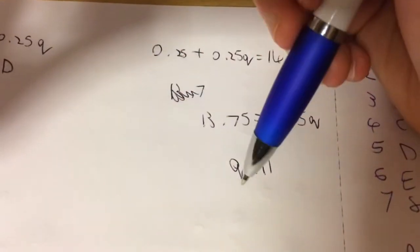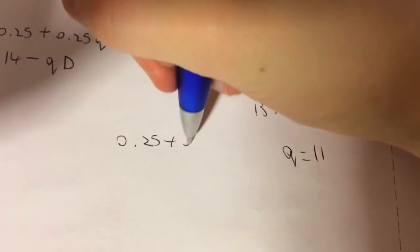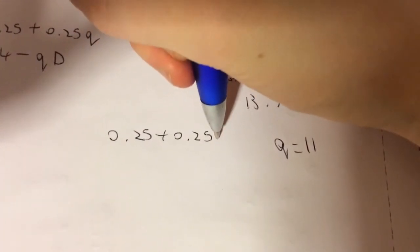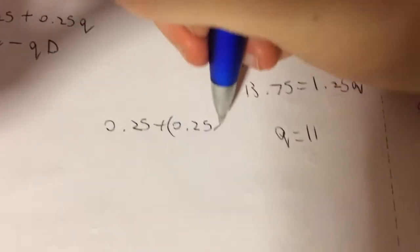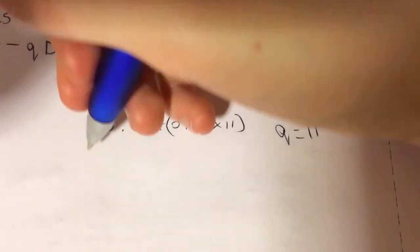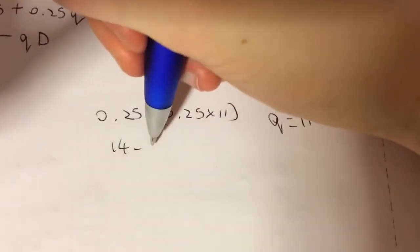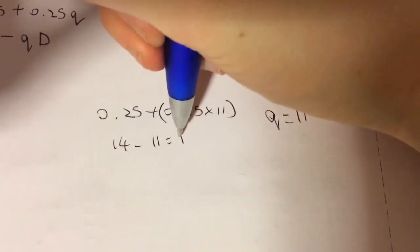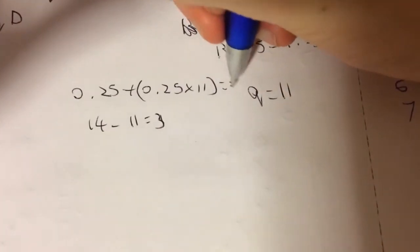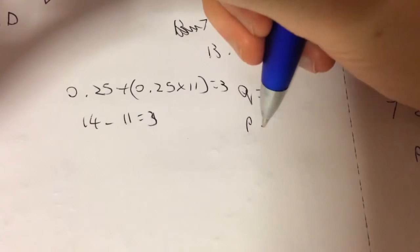If we add this into these equations, so 0.25 plus 0.25 times 11, and then 14 minus 11, both equal 3. So that's the price. The price is 3.